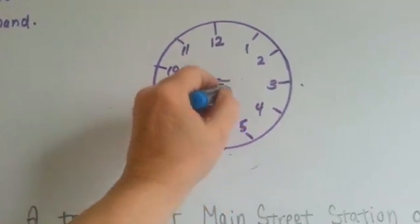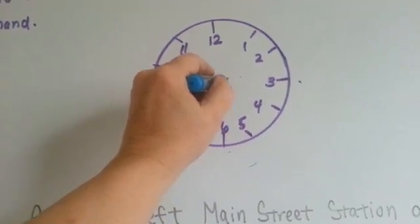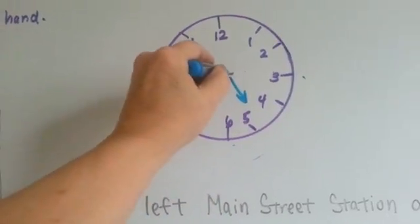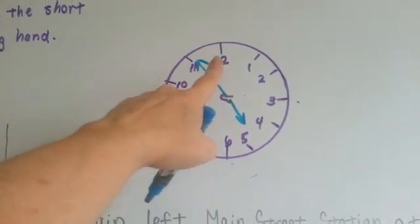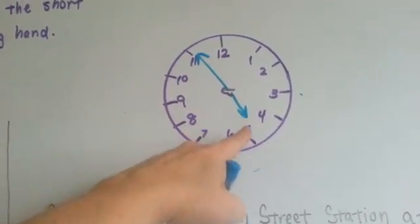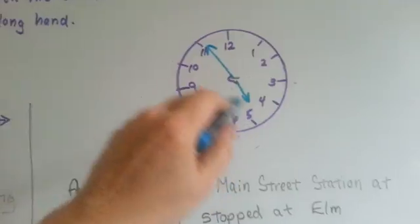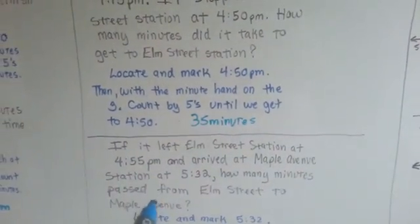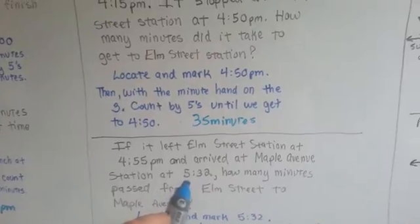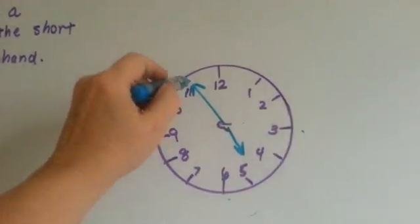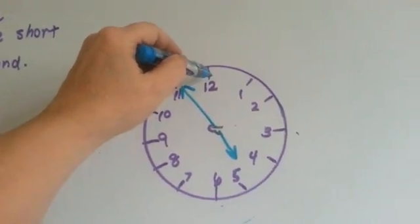And we're going to start at 4:55. So the hour hand is going to almost be at the 5 because 4:55 is really close to being 5 o'clock, and the hour hand is just about to move to the 5. So now it's 4:55 and it arrived at Maple Avenue Station at 5:32. So we need to locate 5:32 on the clock.